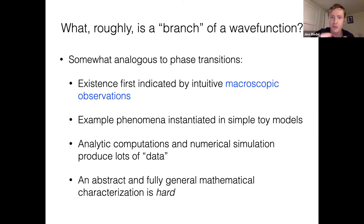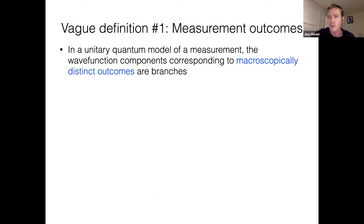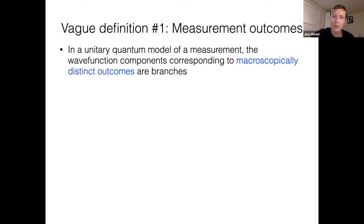Phase transitions have been and continue to be an incredibly rich idea in condensed matter physics. My claim is that the idea of a branch in a wave function has this same form. We're going to start with something abstract and try to get to something more concrete. So let's start with our vague definition — at the level of what do I mean by a phase transition? Well, it's like ice freezing. The first thing to think about is what we mean by measurement outcomes when we take a unitary approach. If you have a unitary quantum model of a measurement, the wave function components corresponding to macroscopically distinct outcomes — that's roughly what I mean by branches.